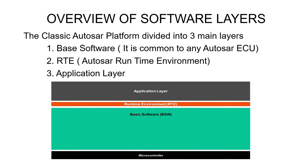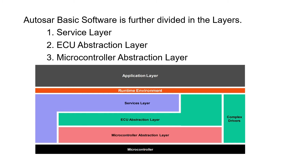Now we can see an overview of the software layers. Basically, the classic AUTOSAR platform is divided into three main layers: one is base software, second one is RTE, and third one is application layer. AUTOSAR basic software is further divided into layers: one is service layer, second one is ECU abstraction layer, and third one is microcontroller abstraction layer. The application layer is the topmost layer, RTE is the middle layer, and base software is the bottom layer.